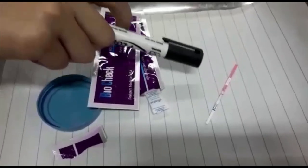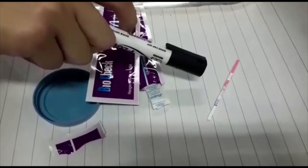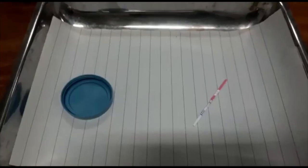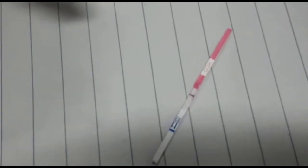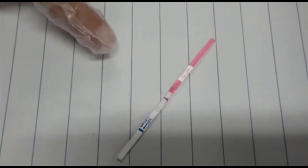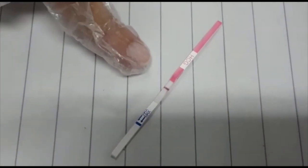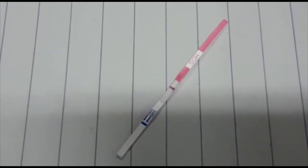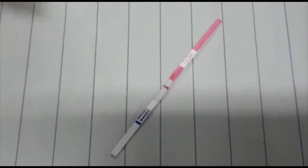For the other line to appear, we will wait for the next 5 minutes. As you can see, after waiting for 5 minutes, the second line has not appeared in the test zone. We have only achieved one line in the control zone. This shows that our pregnancy strip test is negative in this case.